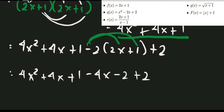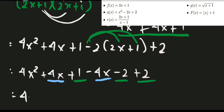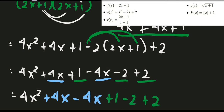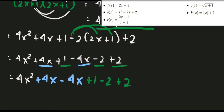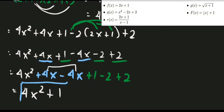Now just combine like terms. We have 4x and -4x, and constants 1, -2, and +2. So: 4x² + (4x - 4x) + (1 - 2 + 2) = 4x² + 0 + 1. Therefore the final answer for q∘f(x) is 4x² + 1.